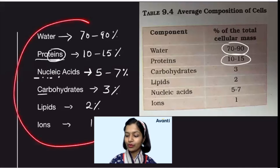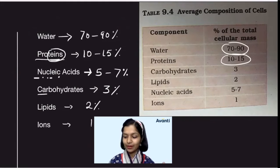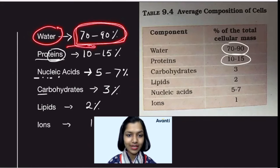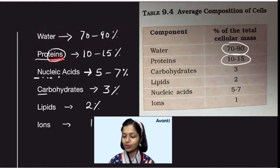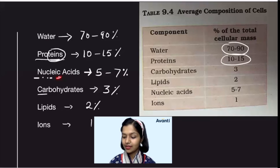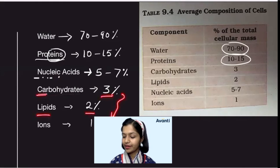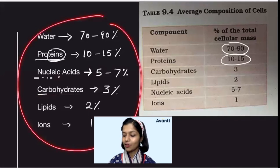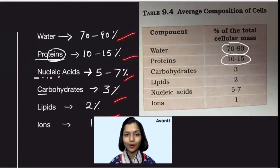So this is table 9.4 of chapter biomolecules. I hope you learned it. 'Aaj blue hai paani paani' — from there you can start. The most content in your cell is water: 70-90%. Paani paani — protein: 10-15%. Protein ends with N — nucleic acid: count the letters, 5 to 7%. Ends with C — carbohydrates: car has 3 letters, 3%. Then lipids: write in decreasing order, 2%. And ions: 1%.